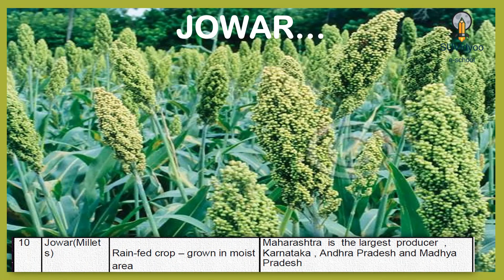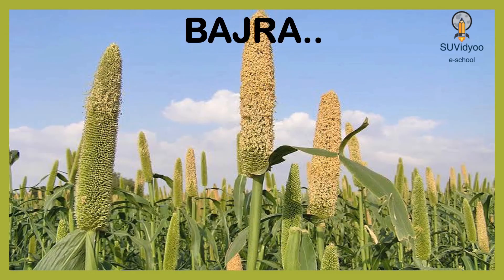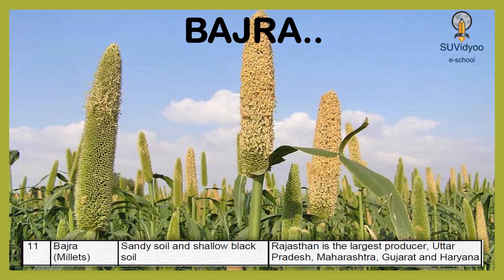Jowar is a millet crop. It is a rain-fed crop grown in moist areas. Maharashtra is the largest producer, followed by Karnataka, Andhra Pradesh and Madhya Pradesh. Bajra is another millet. It grows well on sandy soil and shallow black soil. Rajasthan is the largest producer of Bajra, followed by Uttar Pradesh, Maharashtra, Gujarat and Haryana.